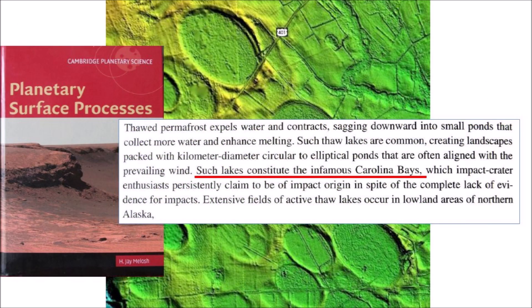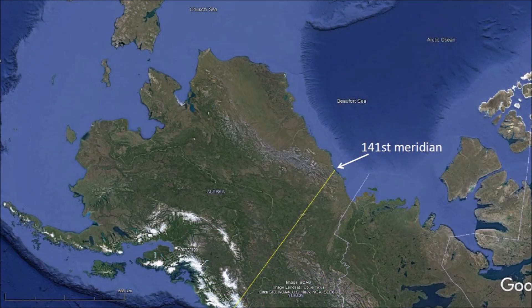Some geology books say that the Carolina Bays are thaw lakes like the ones found in northern Alaska, that form when underground ice melts and creates sinkholes that fill with water and are often aligned downhill or with the prevailing wind. We will now look at the north coast of Alaska, next to the Beaufort Sea, which has a large number of thermokarst lakes that have been compared to the Carolina Bays.